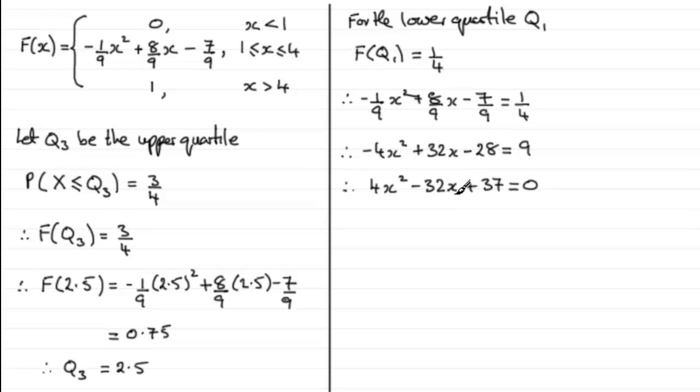Now you could try and factorize this but it doesn't actually go, and judging by the question itself it does seem to suggest decimals really, so I'm going to use the quadratic formula. x equals minus b plus or minus the square root of b squared minus 4ac, all divided by 2a, where in the usual way a is 4, b is minus 32, and c is 37.